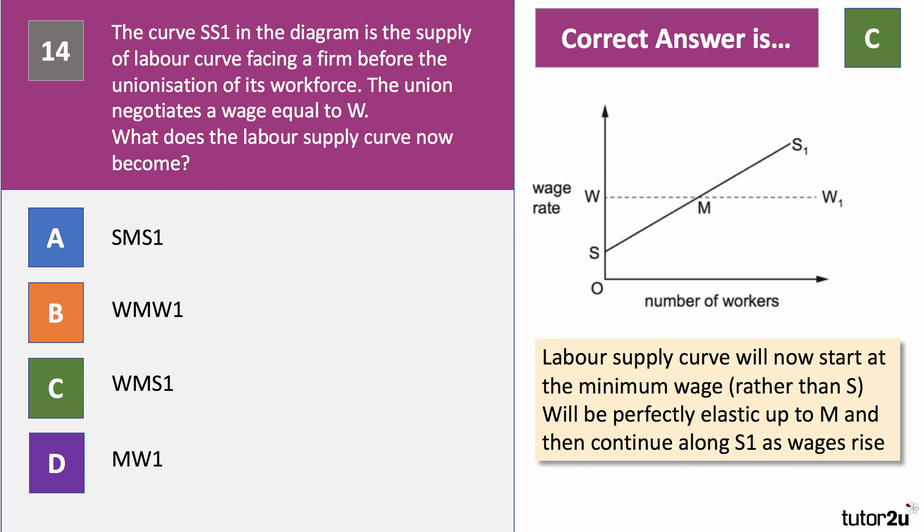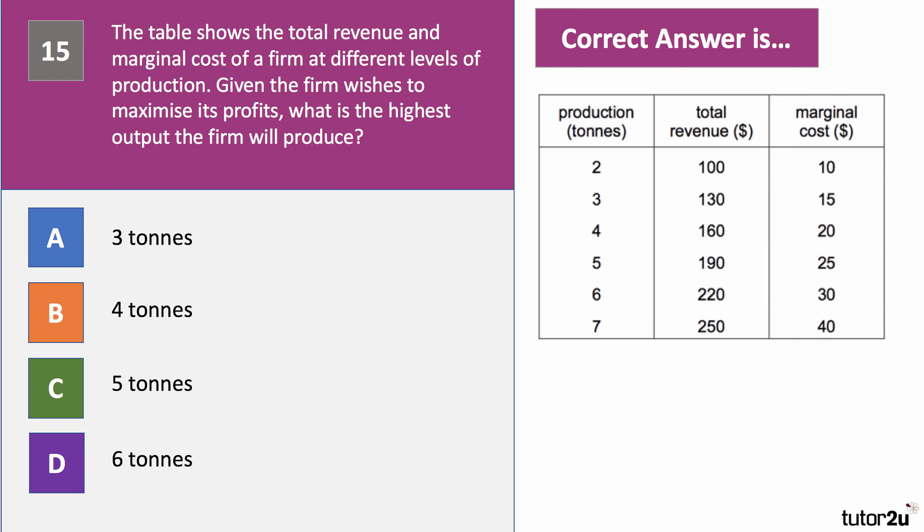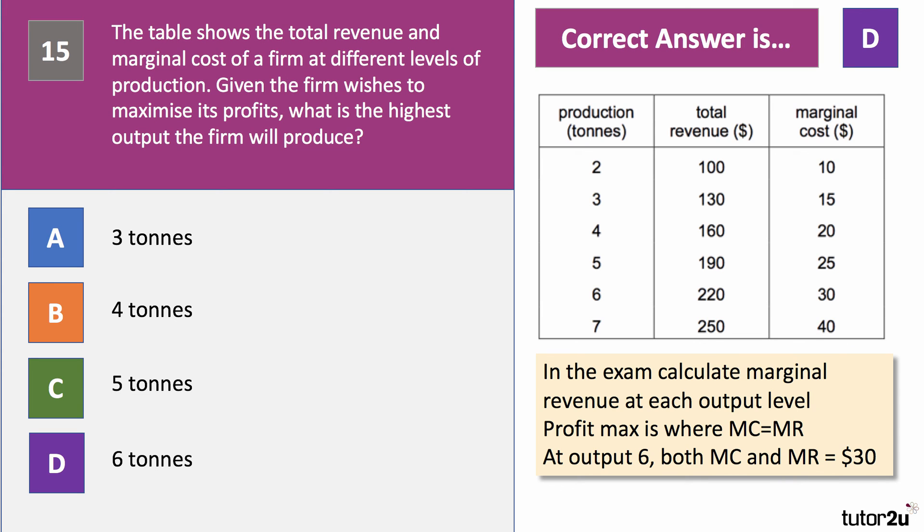We've reached the final question. Question fifteen. The table shows the total revenue and marginal costs of a firm at different levels of production. Given the firm wishes to maximise its profits, what is the highest output it will produce? You maximise profit when marginal revenue equals marginal cost. The right answer is D. At output level six, marginal revenue is 30 — going from 190 to 220 — which also equals the marginal cost of 30. If you went to the seventh unit you'd get 30 extra units of revenue but 40 extra units of cost, so profits would go down.